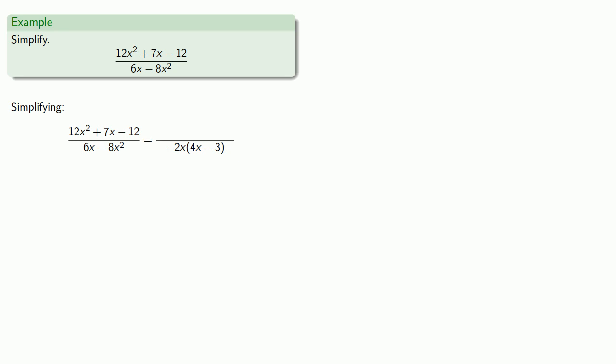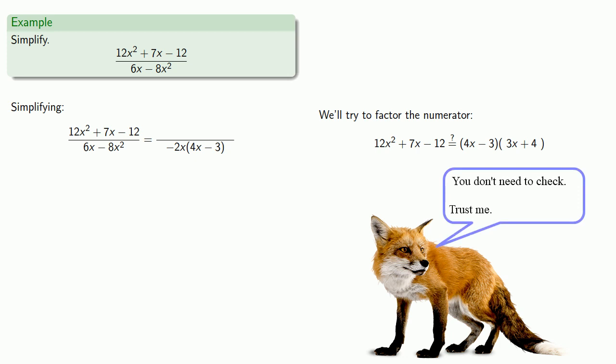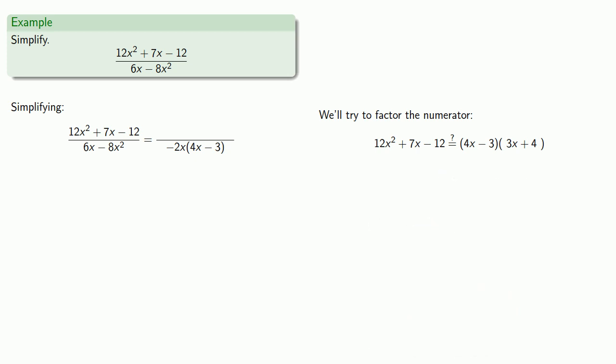Now when we go to factor the numerator, remember, we only really care if we have a common factor. So we'll try to factor the numerator. And the only thing that matters is whether or not it has a factor of 4x minus 3. So if 12x squared plus 7x minus 12 can be factored as 4x minus 3 times something, it's got to be 3x plus 4. And since we live in a kind and gentle universe, the first thing we try as our factorization will always work. But I'd check it anyway. Make sure that this really is the correct factorization. And it is, so we can factor our numerator, then remove our common factors.